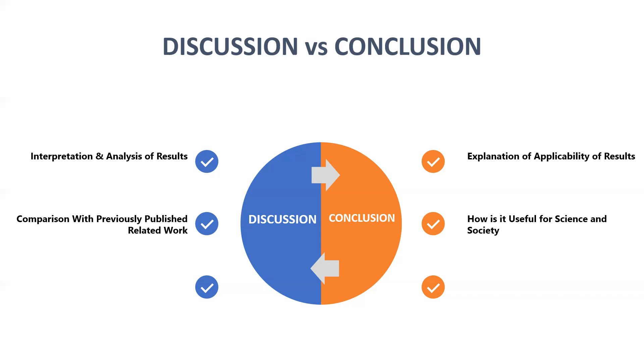Coming to the next last point in discussions: we discuss the limitations and unexpected outcomes. When we get the results and compare them with previously published work, we come to a point that there are some limitations on this work and they have to be overcome.